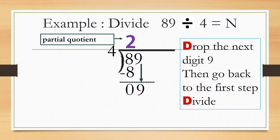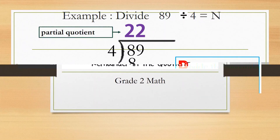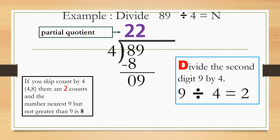Next is D for drop — drop the next digit 9. Then go back to the first step, D, which is divide. Divide the second digit 9 by 4. 9 divided by 4 equals 2.